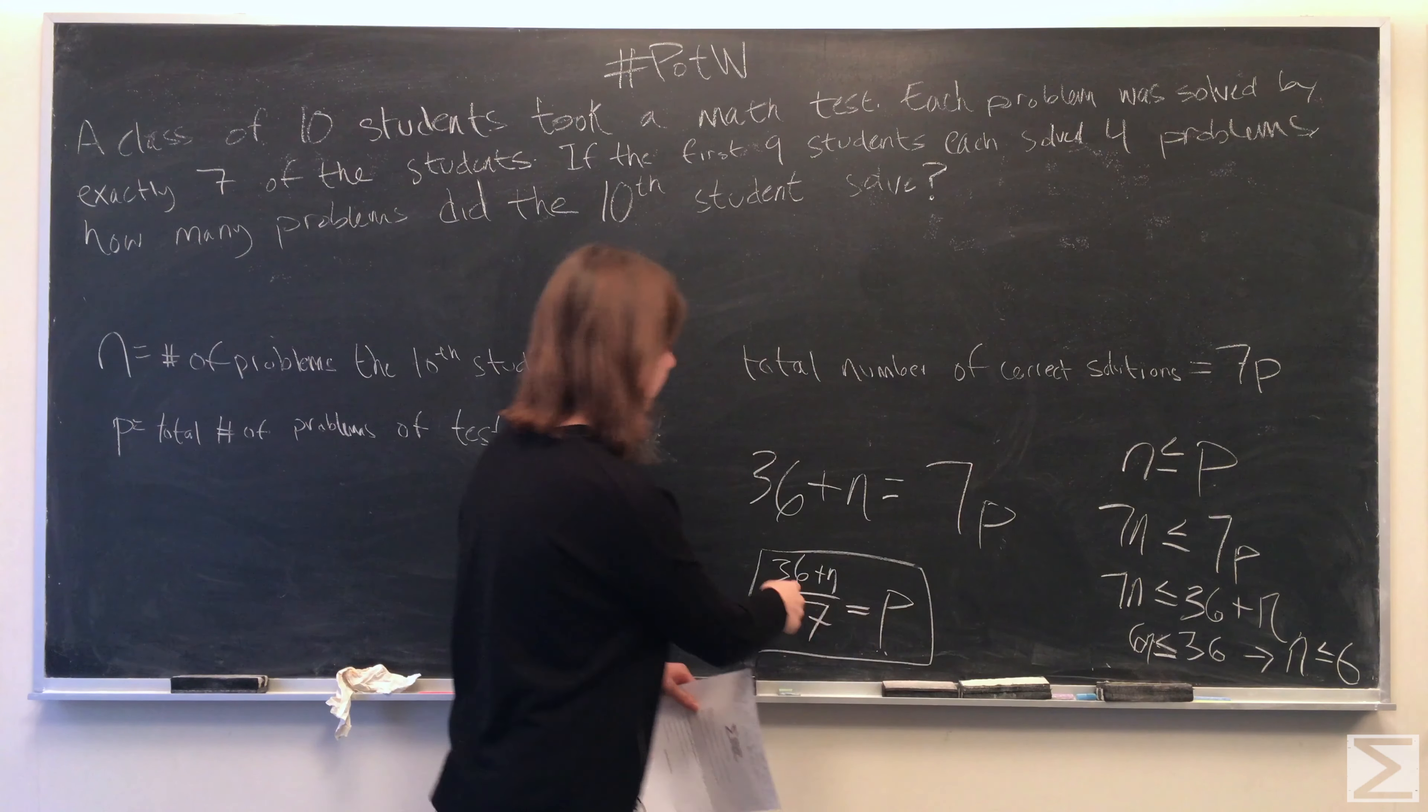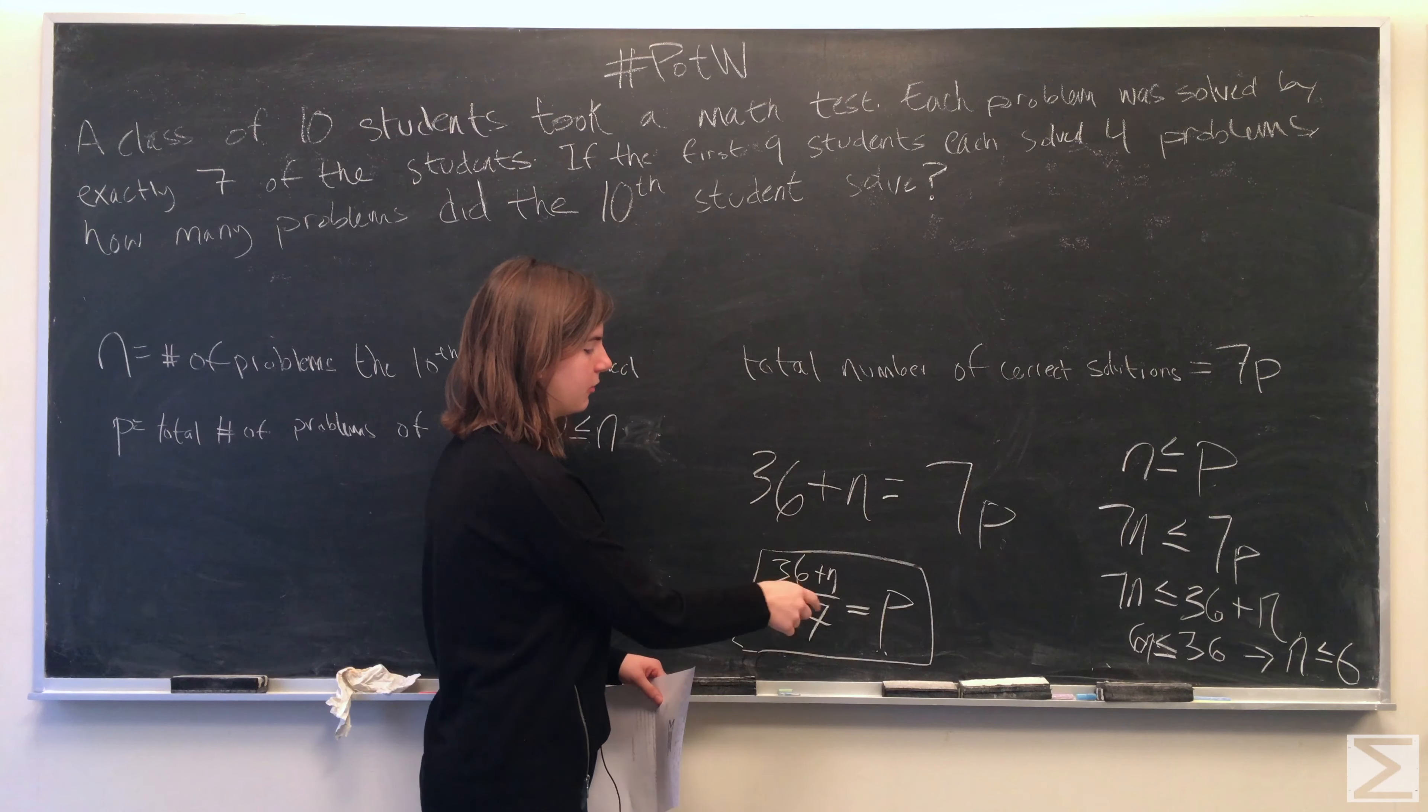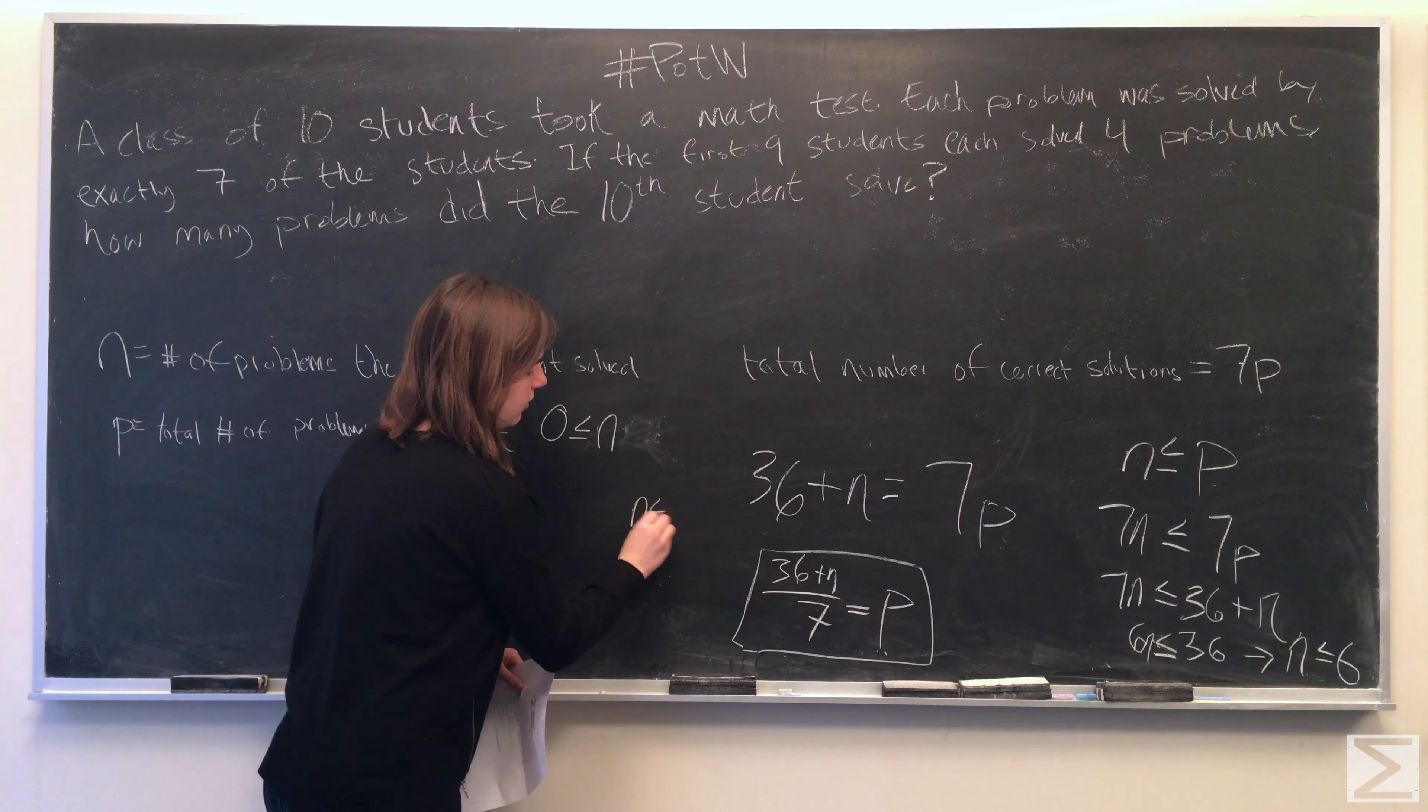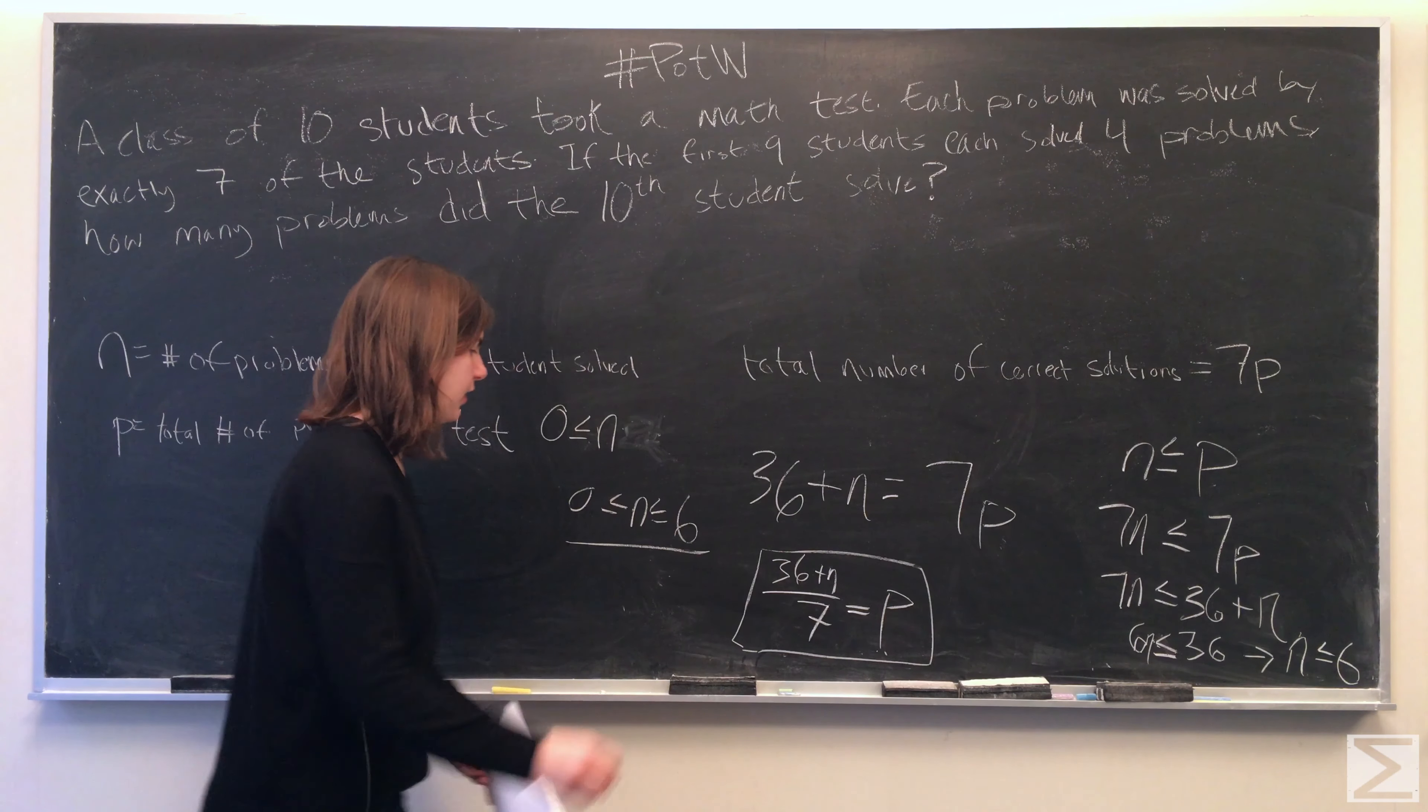So we have 36 plus n divided by 7 is equal to p, and n is between 0 and 6. The only number that works that gives p as an integer is n equals 6.